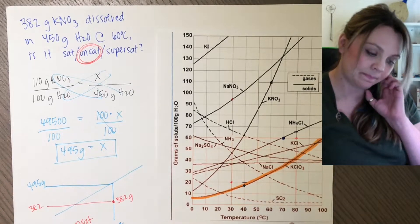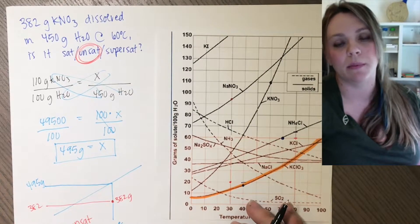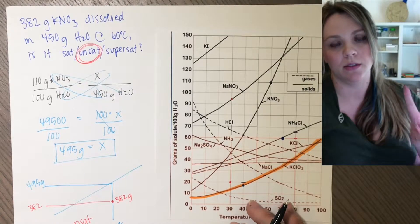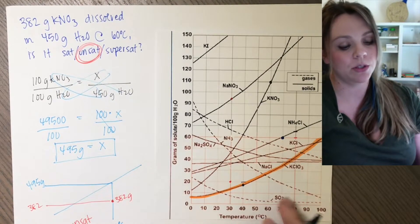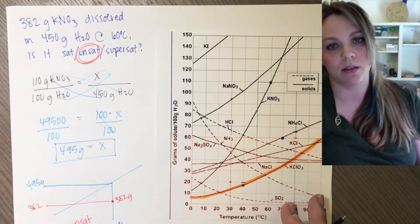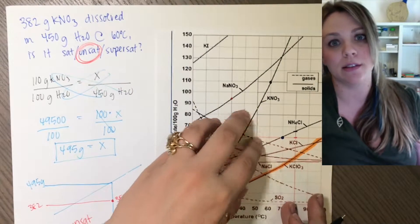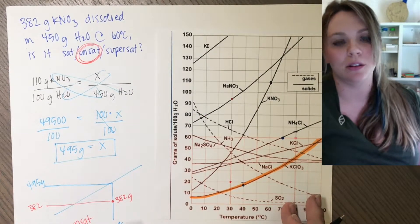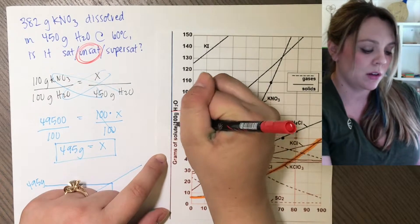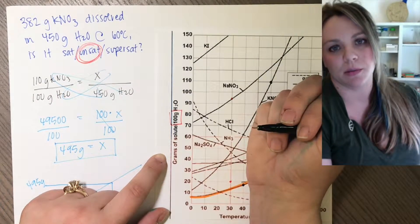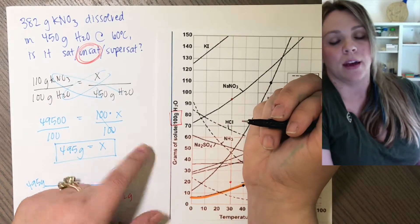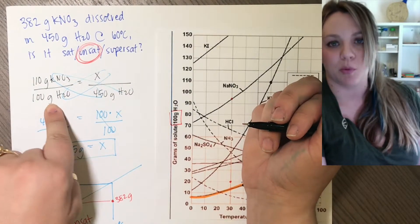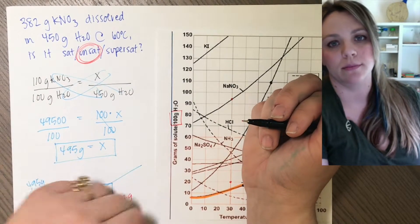Hopefully that makes sense. Again, three types of solubility curve questions: one, can you just read the graph — the easy identifying questions; two, easy calculations when the question involves 100 grams of water; three, calculations where you actually have to set up a proportion to a new amount of water.